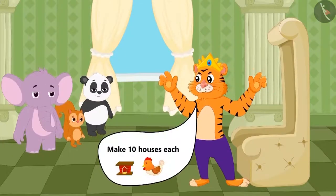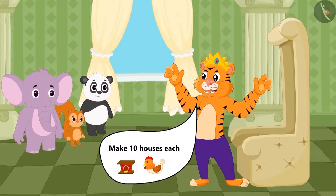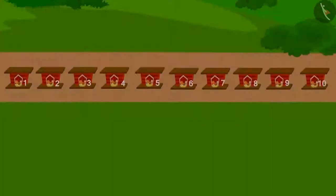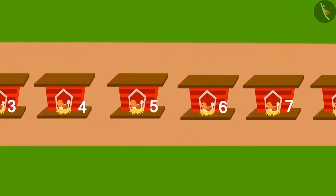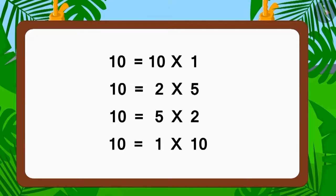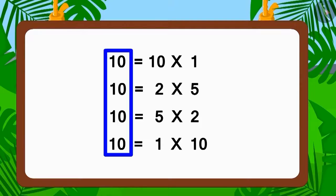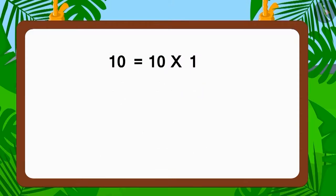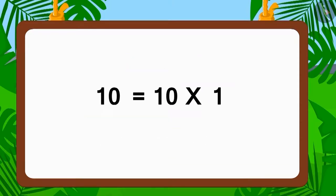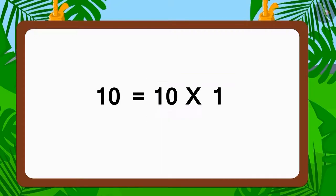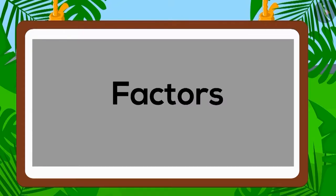Children, as per the conditions stated by the king, can you build the house for the hens in any other way? Absolutely right! We can also build the house by placing ten hens in one row. If you look closely, you will find that we have written ten as four different forms of multiplication. This is how we can write any number as a multiplication of two numbers.